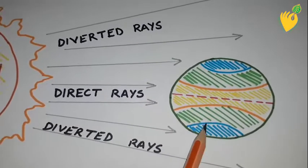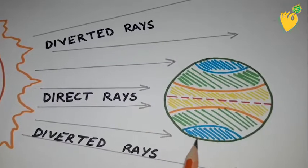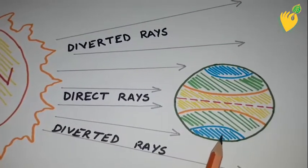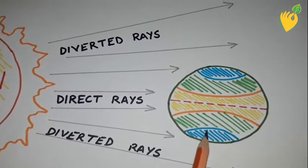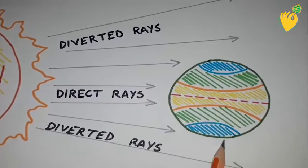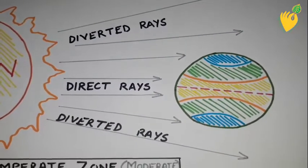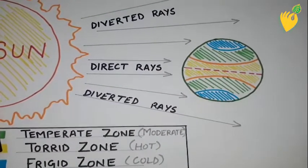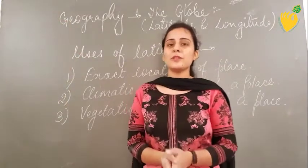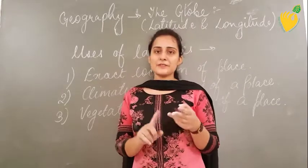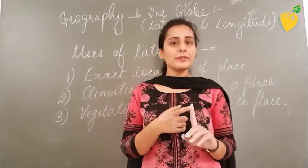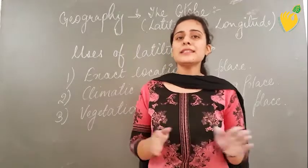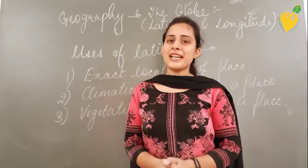The temperate zone has a moderate climate — sun rays are neither direct nor too much diverted. Towards the pole, the sunlight crosses through and the region remains mostly cold throughout the year. This is the reason different regions of the earth have different types of climate and temperature. That was all about this chapter — the concept of grid lines, the globe, latitudinal lines, longitudinal lines, heat zones, and the distribution of sunlight affecting temperatures over our planet.